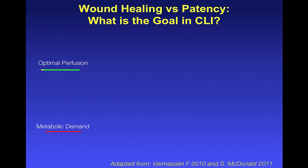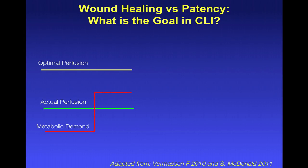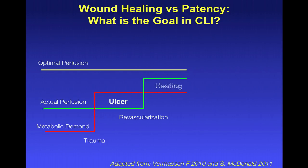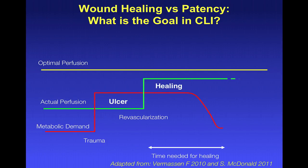This is an overview of some important principles of BTK interventions. Optimal perfusion occurs when everything is intact — that's what we want. Actual perfusion may be less than optimal when there are areas of stenosis within the vessel. However, the metabolic demand is stable, so the patient is either asymptomatic or does not have a chronic or non-healing wound.